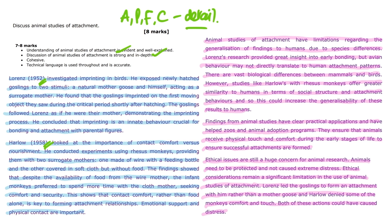Moving on to the AO3 evaluation material, a balanced assessment of both studies has been presented. Strengths such as the practical applications of the findings for zoos and animal adoption programmes have been acknowledged, showing the positive impact of the research. Limitations have also been considered, particularly the ethical concerns. The evaluation in a response like this does not need to be equal — you don't need to present the same number of strengths and limitations, but information on both must be presented.